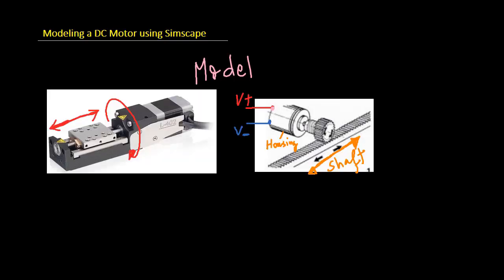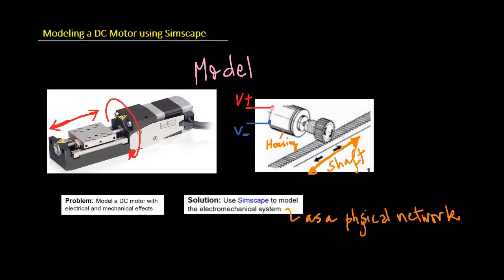The system we wish to model looks like this: a DC motor that has two electrical connections and two mechanical connections, including one connection that can translate along an axis. We wish to model this system with electrical and mechanical effects, and we will use Simscape to model it.